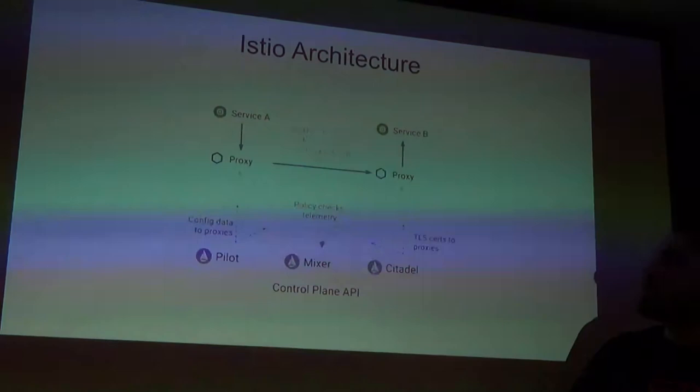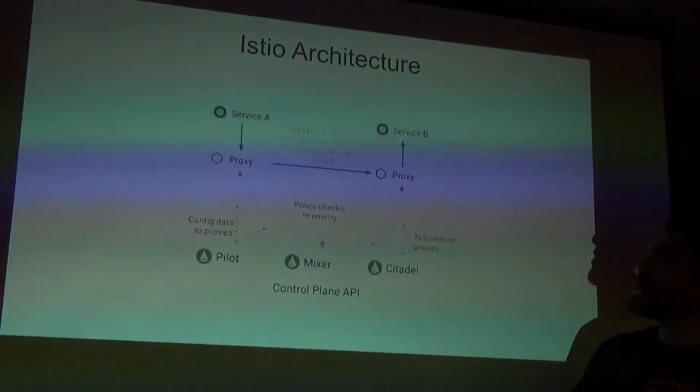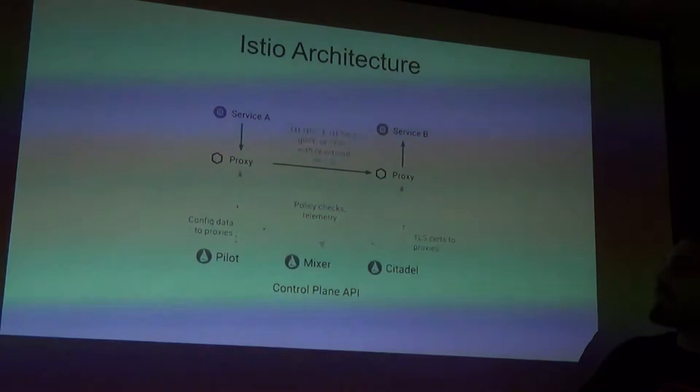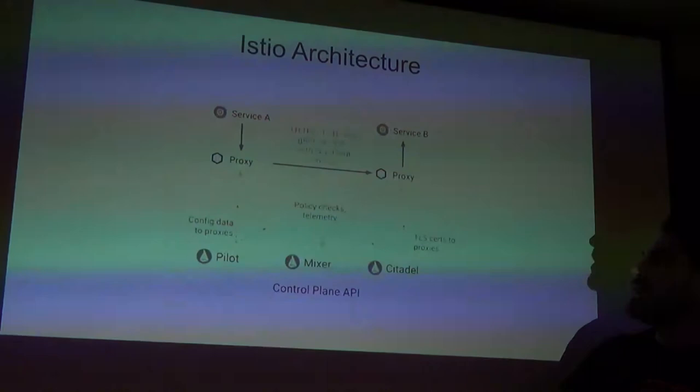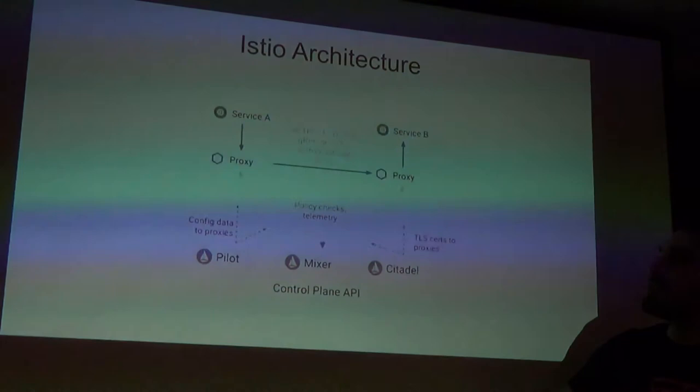Since all network traffic goes through proxies, the proxies periodically send telemetry and policy checks to Mixer, including connection counts and connection pools. There is also a feature that lets you secure all connections between proxies — Istio manages certificates, behaves like a certificate manager, and refreshes certificates periodically. That way proxies authenticate each other and secure their connections, which is a nice security feature: you can secure connections without making any changes to your code.